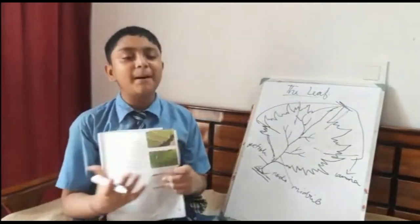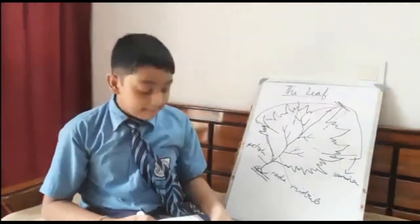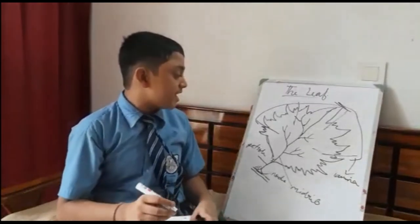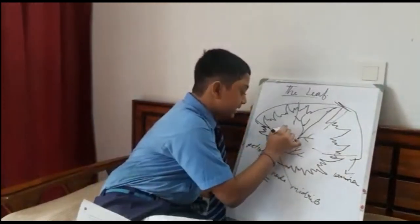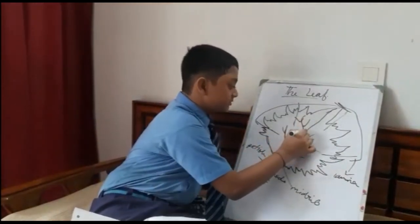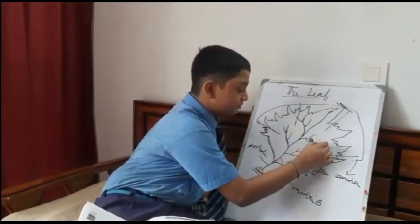So now another part is, what are veins? Many natural branches known as veins arise from the midrib. Yes, these natural branches you can see arise from the midrib. They are known as veins.